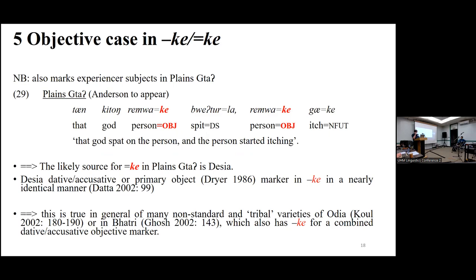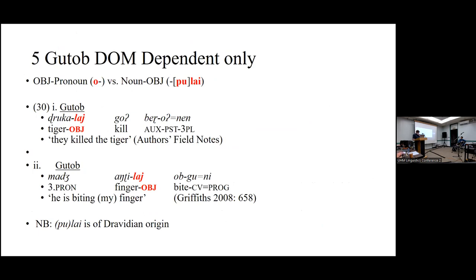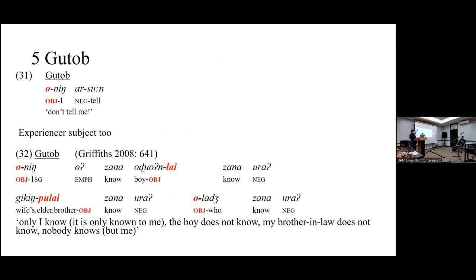In the case of Gutob, it's very clear that this -ke comes from a variety of Odia called Desiya, or possibly another Indo-Aryan language — the local tribal Indo-Aryan lingua franca. We find this -ke across substandard varieties of Odia as well. Looking at other southern Munda languages, we see this pattern consistently: a pronoun marked by a prefix and objects marked by something else — in some cases a vowel prefix 'a-' and another borrowed suffix, in one case a Dravidian word rather than Indo-Aryan. Experiencer subjects are differentiated from pronouns and nouns: the subject of a verb like 'know' is marked as an object.